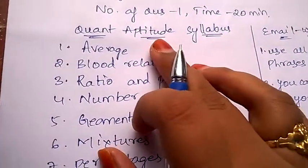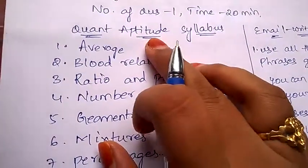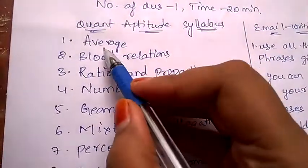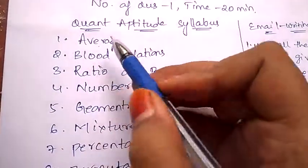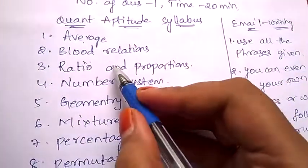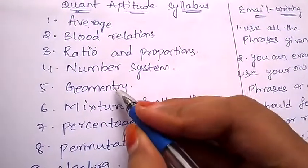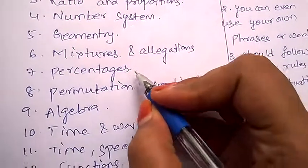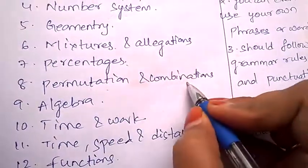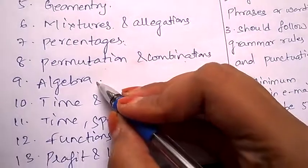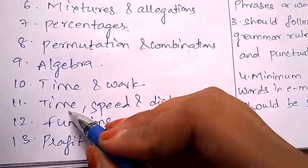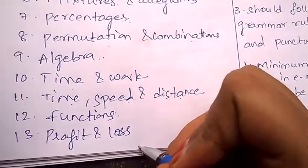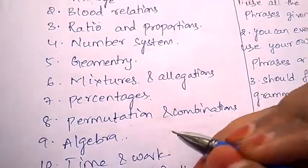Now let's see what are the topics which will be covered under quantitative aptitude: average, blood relations, ratio and proportion, number system, geometry, mixtures and allegations, percentages, permutation and combination, algebra, time and work, time speed and distance, functions, profit and loss. These are the 13 topics from which the questions will appear.